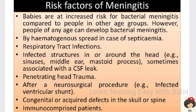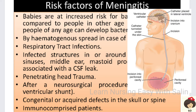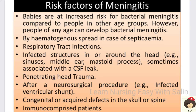After neurosurgical procedures such as ventricular shunts — used for hydrocephalus (excess CSF accumulation in the brain) — if strict aseptic technique is not followed or adequate post-procedure dressing is not done, microorganisms can enter and infect the brain. Congenital or acquired defects in the skull or spine where the skull is not properly formed also predispose a person to meningitis. Immunocompromised patients, whose immune systems are weakened by drugs or cancer treatment, are also at increased risk.